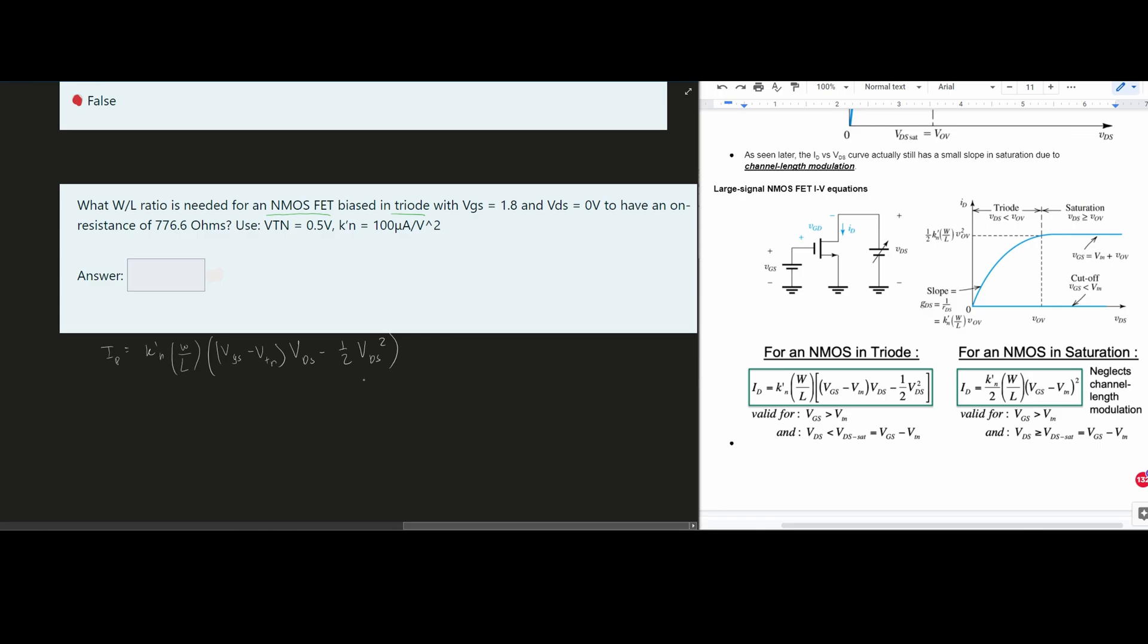Now this confused me a little bit at first, but it's about to make a lot of sense. So what do we want to find? We want to find the W/L ratio here. But an important part that we're given is this on resistance of 776.6 ohms. That's very important.